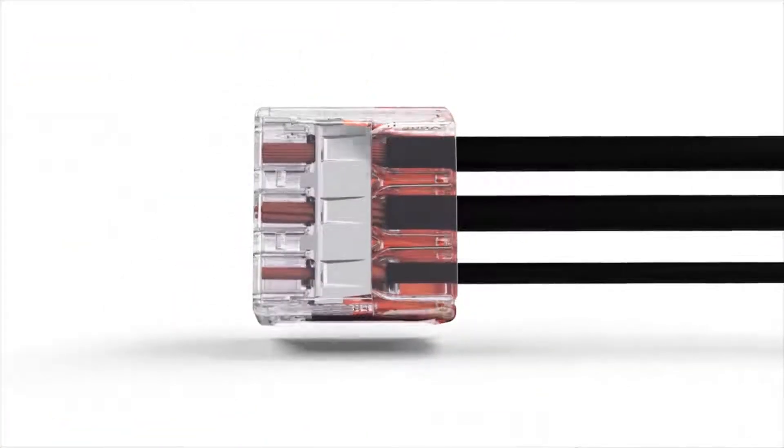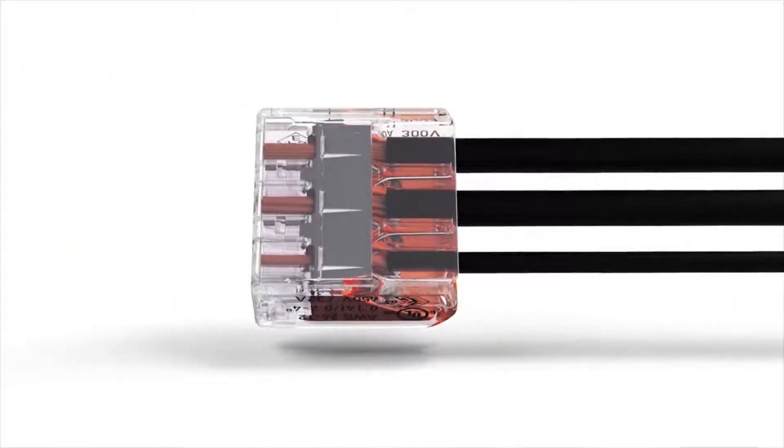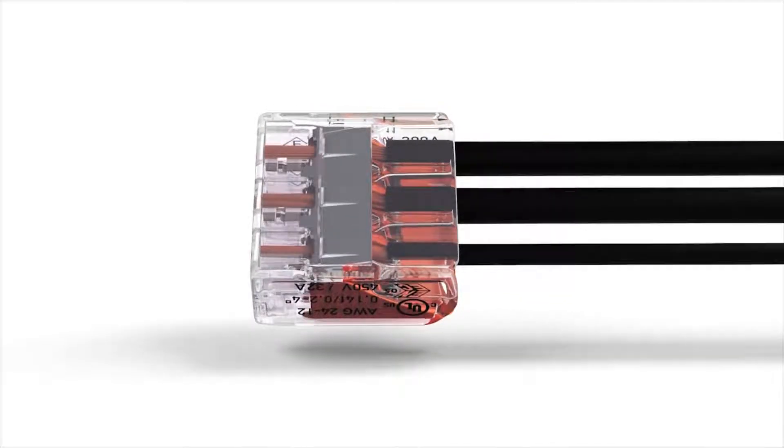The transparent housing permits inspection of the conductor position. It clearly shows if conductors have not been inserted far enough, or if they have not been stripped properly.